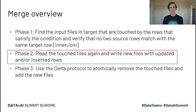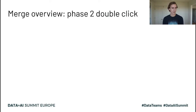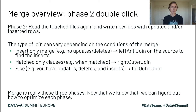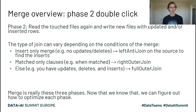Let's double click on the second phase because that can vary depending on what you're trying to do. The second phase is reading those touched files and then writing the new files with the updated and/or inserted rows. There's a join happening underneath the hood, and the type of join varies depending on the conditions of the merge. For example, if we're doing an insert-only merge — meaning we have no updates or deletes — then we're going to do a left anti-join on the source and the target.